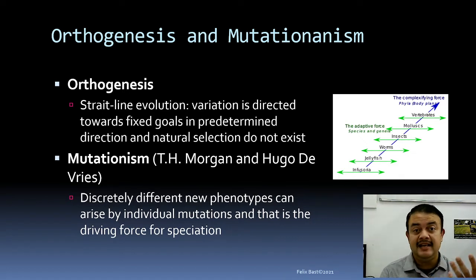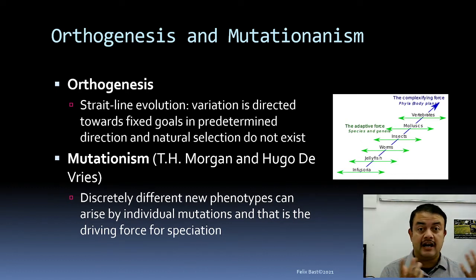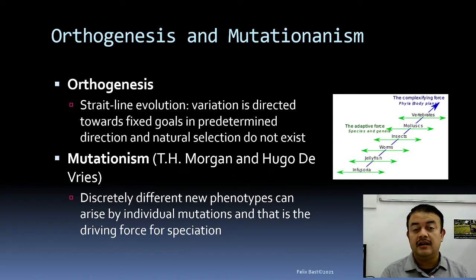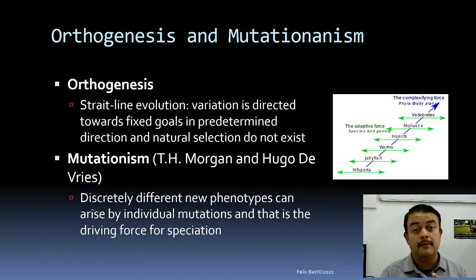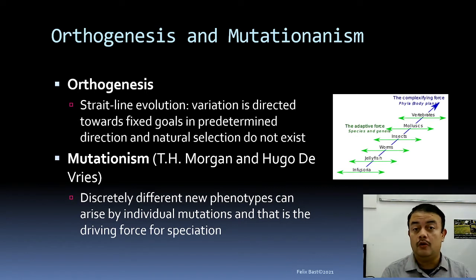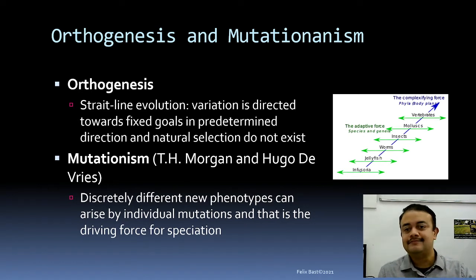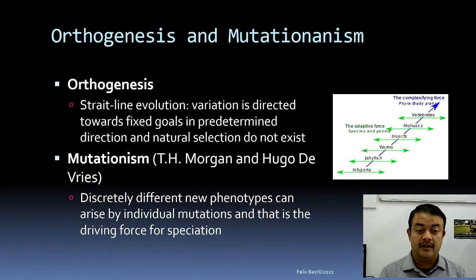We perceive humans as 'higher' because of our consciousness and linguistic abilities, but we cannot truly compare consciousness across species. We don't even know whether consciousness exists in other animals unless we can interpret how they communicate. So orthogenesis is an incorrect framework.